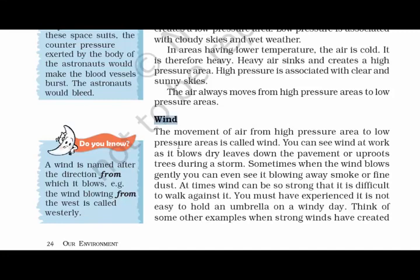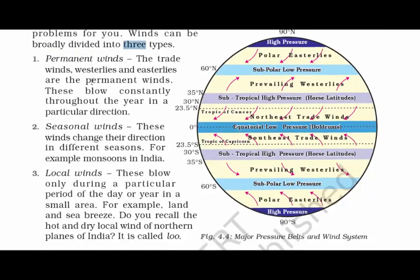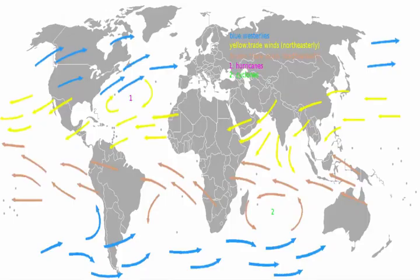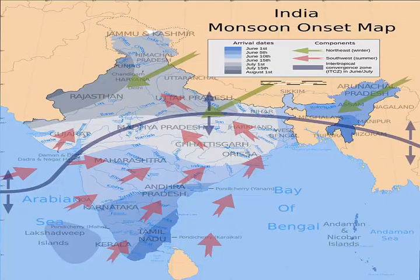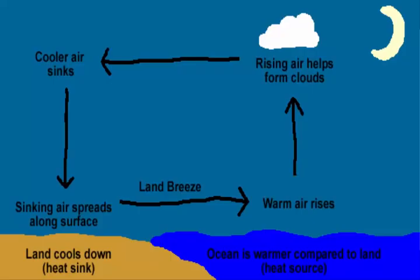Winds are the movement of air from a high-pressure area to a low-pressure area. Winds are broadly divided into three types: permanent winds, seasonal winds, and local winds. Permanent winds, also called trade winds, blow constantly throughout the year in a particular direction — you can see these indicated by colorful arrows on a world map, constantly moving around the continents. Seasonal winds change their direction in different seasons — for example, monsoons in India, where the monsoon winds come from the southern part through Kerala, which is the first state to witness monsoon. Local winds blow only during a particular period of the day or year in a small area — for example, land and sea breeze.